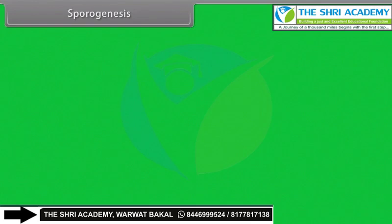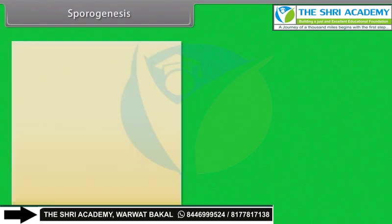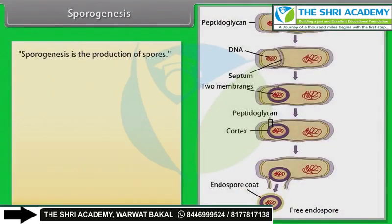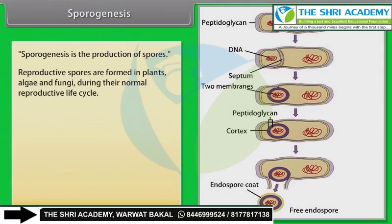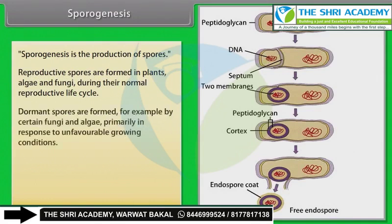Sporogenesis is the production of spores. Reproductive spores are formed in plants, algae and fungi during their normal reproductive life cycle. Dormant spores are formed, for example by certain fungi and algae, primarily in response to unfavorable growing conditions.